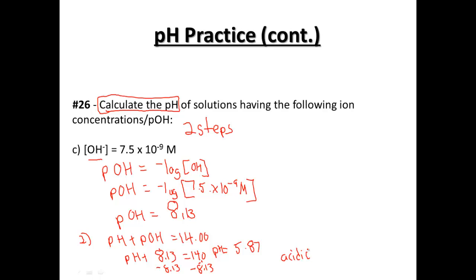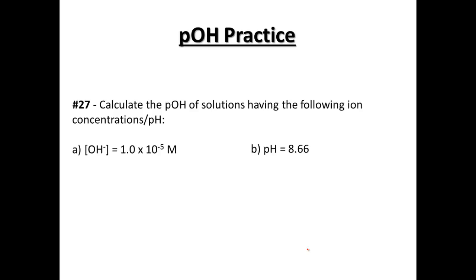I'm going to have you work through 27. The difference with 27 is you are going to be calculating the pOH instead. And so it's just the opposite, but still a similar equation. Work through 27, A, B, and C. And I will be looking at those in class. All right.